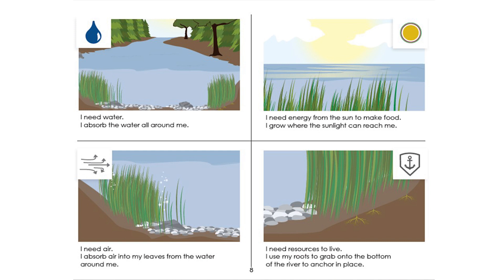The yellow circle means plants use the energy from the sun to make their food. The shelter and protection icon has changed because plants need to stay in the same place to get sunlight. I need water — I absorb the water all around me. I need energy from the sun to make food — I grow where the sunlight can reach me. I absorb air into my leaves from the water around me. I need resources to live — I use my roots to grab onto the bottom of the river to anchor in place.